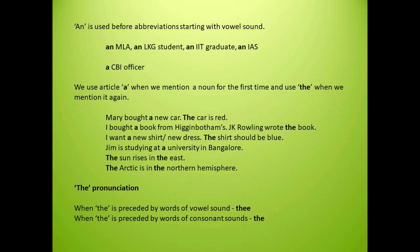In this example, the car is first addressed using 'a,' and in the next sentence 'the car is red,' it is addressed the second time, so we use 'the.' Another example: I bought a book from Higginbothams. J.K. Rowling wrote the book. Here I am mentioning the book for the first time, so I use the article 'a.' In the next sentence, I am specifying that specific book which I bought, so I use 'the.'